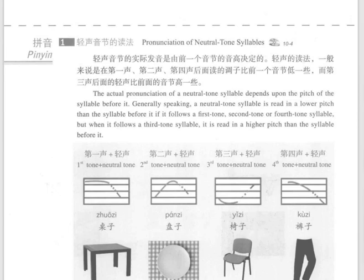轻声音节的读法。Pronunciation of neutral tone syllables. 桌子、盘子、椅子、裤子。